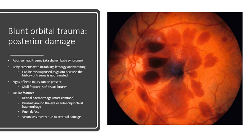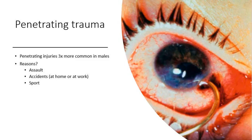Signs of head injury can also be present, and the baby might have a skull fracture or soft tissue bruising on their face or head. The ocular features include retinal hemorrhage, which is the most common, and you can see severe retinal hemorrhage all throughout here, particularly around the macular area, causing quite serious sight loss. The baby can have bruising around the eye or a subconjunctival hemorrhage, a pupil defect, and vision loss may also be due to cerebral damage — not necessarily just from the hemorrhaging. So these signs need to be observed very carefully in any child presenting with what looks like bruising around the eyes.